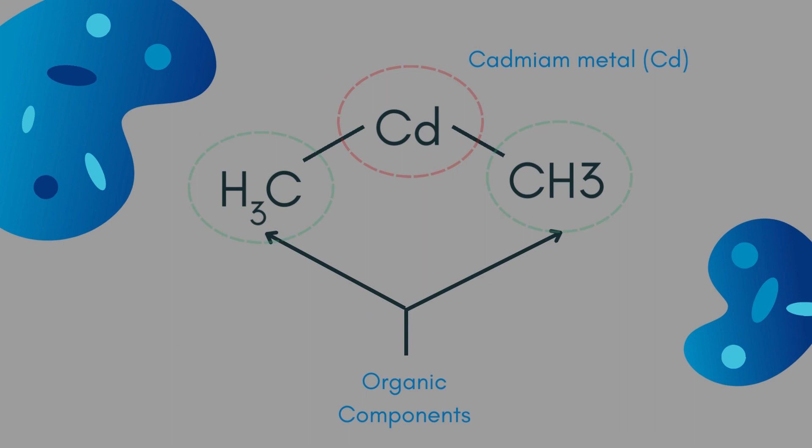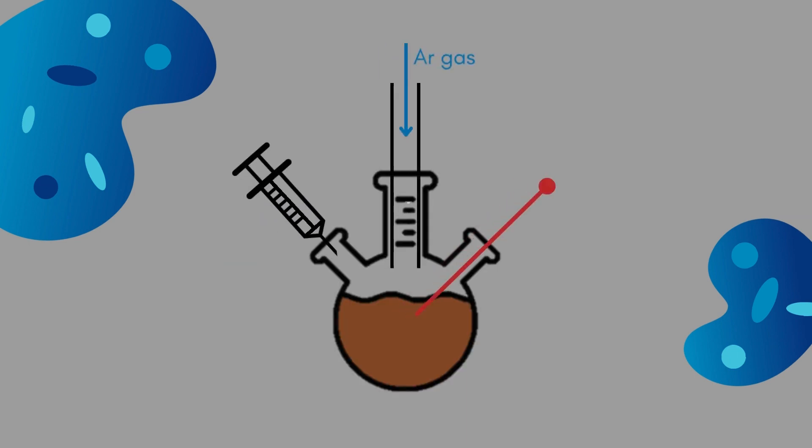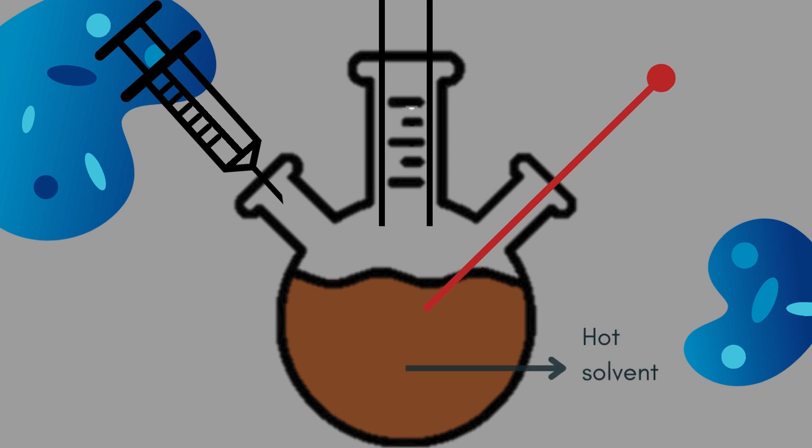In simpler terms, these reagents are organic compounds that contain metal, and they act as the building blocks or starting materials for creating the desired nanoparticles. This mixture was introduced into a hot coordinating solvent that had a notably high boiling point. The heat and the reagents combined caused an abrupt supersaturation, akin to suddenly saturating a solution with too much salt or sugar, triggering nucleation or the initial formation of particles at a precisely defined moment.